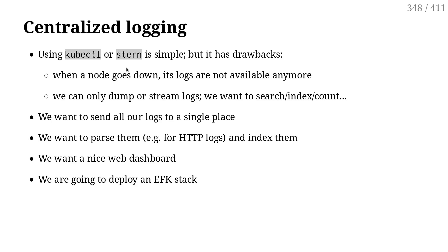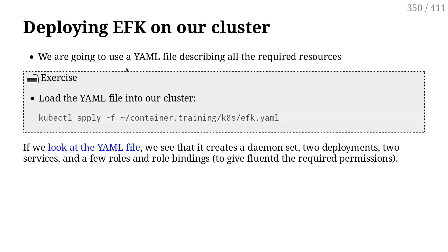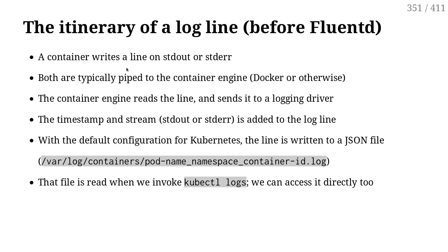Since I won't have the time to do the demo, I want to explain the general idea — in particular, to explain the path of a log line in a Kubernetes cluster. When a container writes something on stdout or stderr, this gets piped to the container engine, whether it's Docker or something else. The container engine receives the log line and sends it to a logging driver.